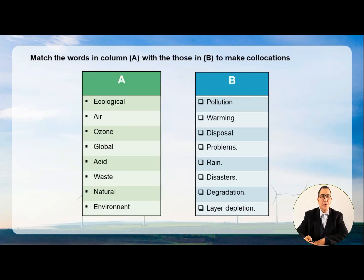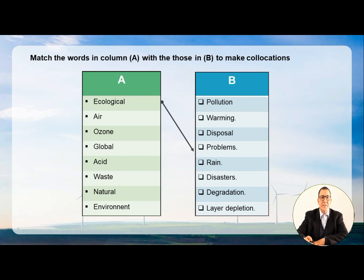Now let's move on to another activity, still with vocabulary. We have two columns, A and B, and we are supposed to match the words in column A with those in column B to make collocations. Ecological goes with problems — ecological problems. Air — air pollution. Ozone — ozone layer depletion.